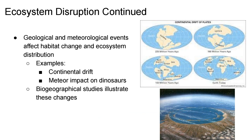Geological and meteorological events can also affect habitat change and ecosystem distribution. The meteor impact that wiped out the dinosaurs changed the atmosphere completely. Continental drift — the shifting of continents through geological time — is supported by biogeography evidence from evolution, showing similar plants and animals found on different continents, demonstrating they were once joined. These large shifts obviously impacted local ecosystems and communities.